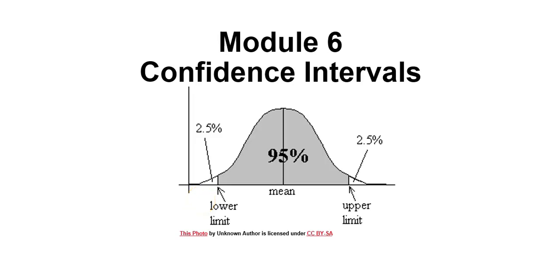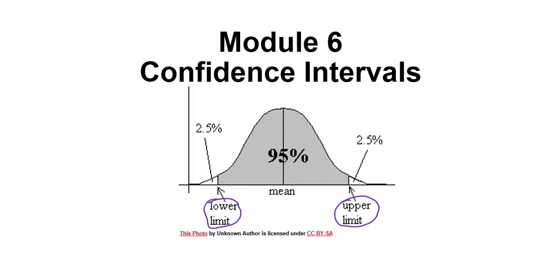Hi there, and welcome to Module 6, where we will discuss confidence intervals. A confidence interval is making a prediction or an interval that predicts the value of the mean of a population or the proportion of a population by having a lower limit and an upper limit. Together, the lower and upper limit create an interval, and the hope is that the true value of the mean or the population proportion is located in that interval.